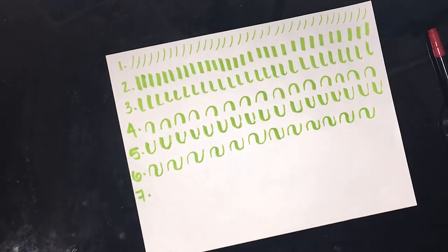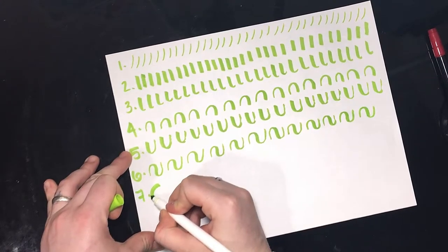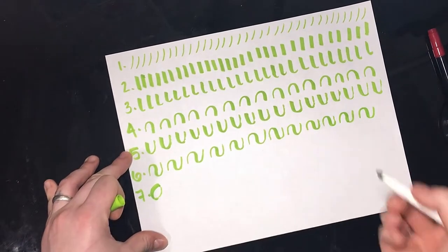The next thing we're going to do is an O. So you make the one side thicker, and then the up stroke is going to be thinner.